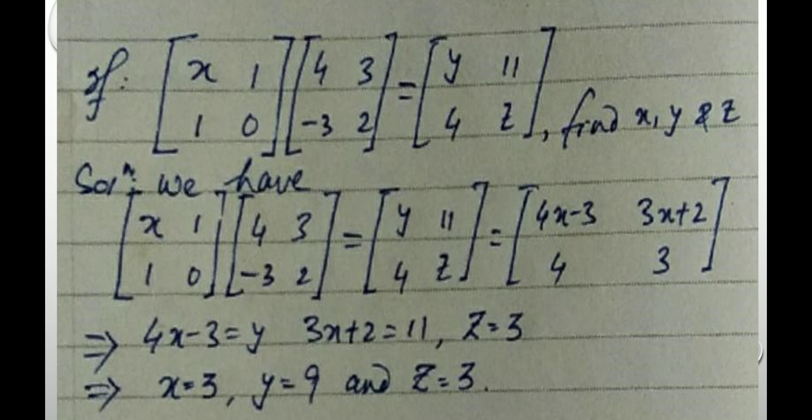Next, if x, 1, 1, 0 to be multiplied with 4, 3, minus 3, 2, then the resultant matrix is y, 11, 4, z. Then find x, y, and z solution.